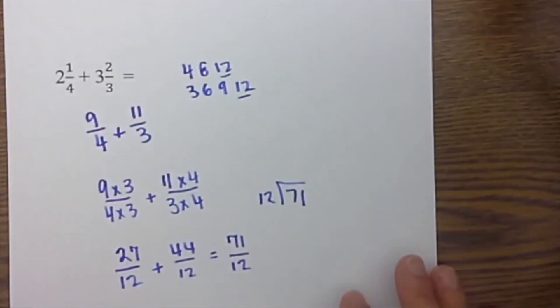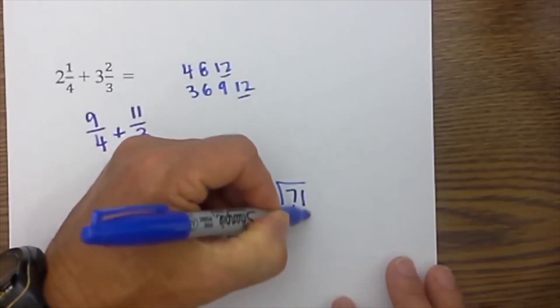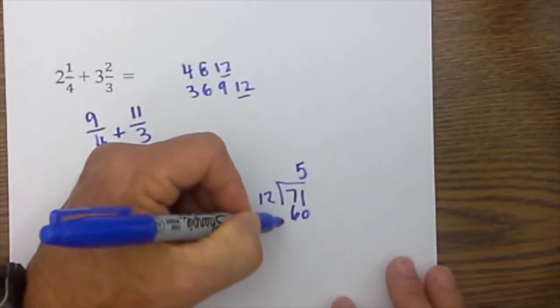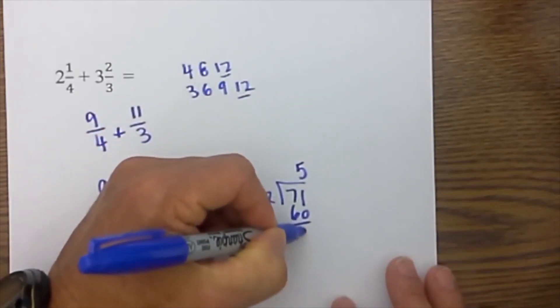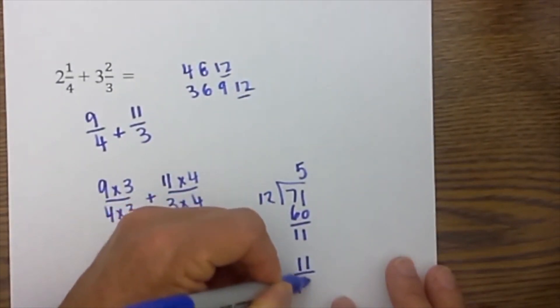12 will go into 71 five times, and that is equal to 60. So now I have a 5 here and that leaves me with 11 left over, so it becomes 11 over 12.